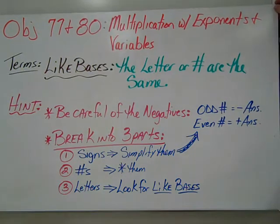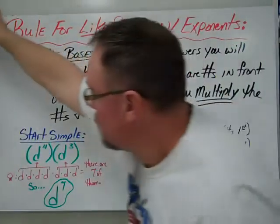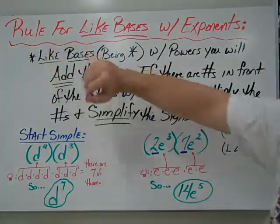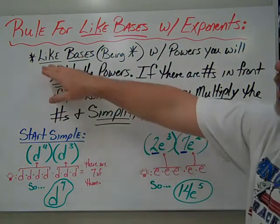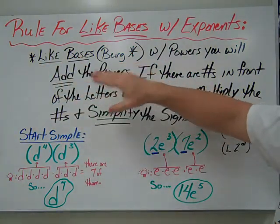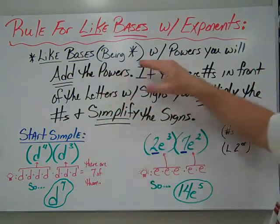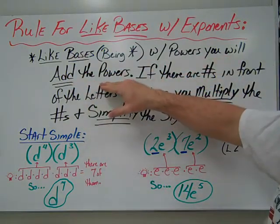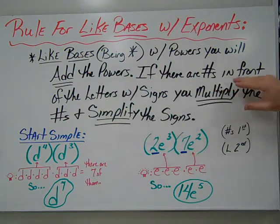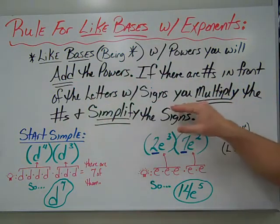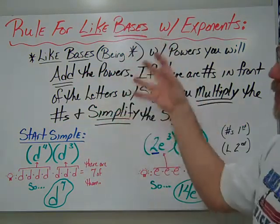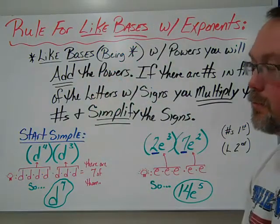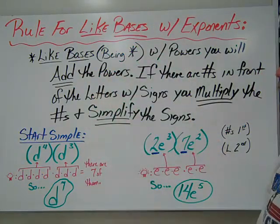Here is the rule for like bases with exponents — one of the biggest things in this chapter. Like bases that are being multiplied — like bases are the letters with powers — you will add the powers. If there are numbers in front of the letters with signs, you multiply the numbers and simplify your signs.